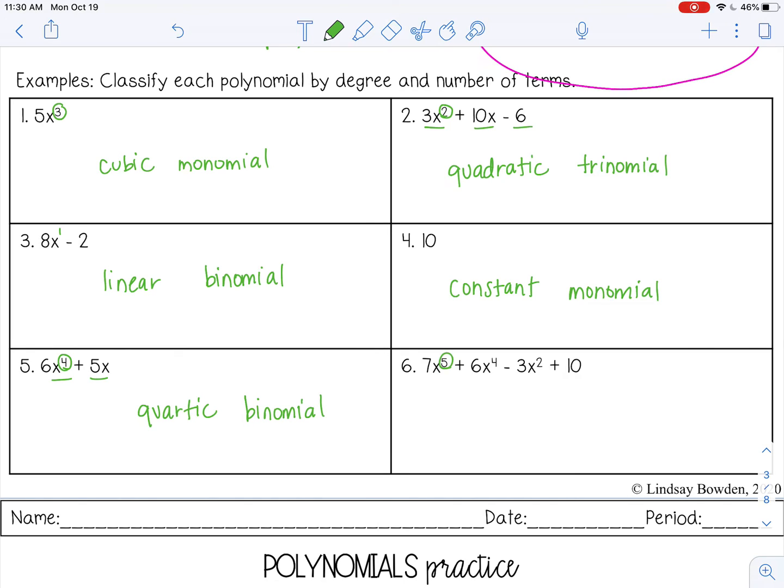And then six, the highest degree is 5. And it has four terms. So a quintic polynomial.